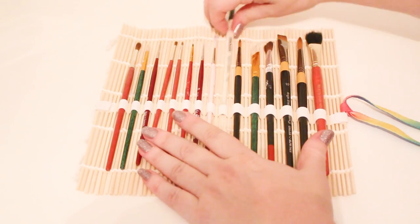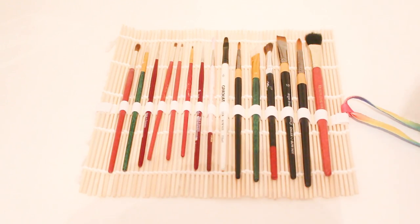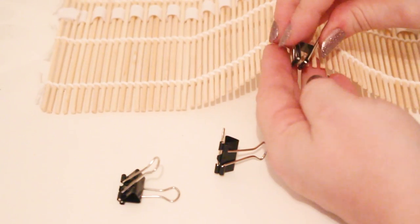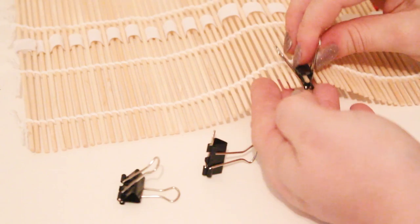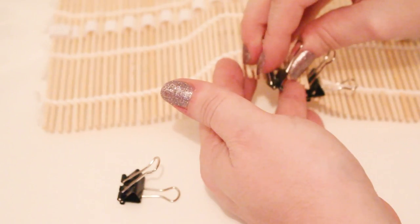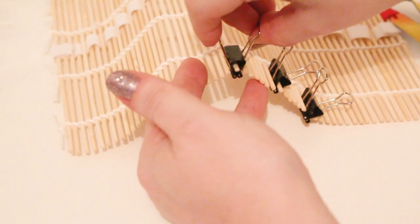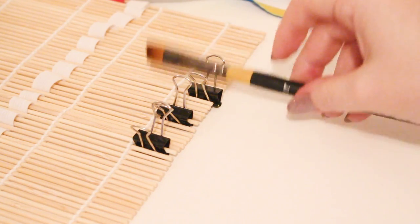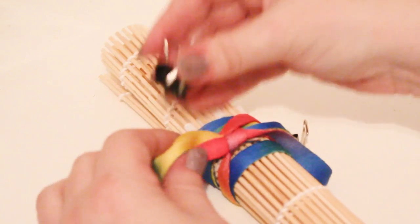And as a little added extra, if when you're using your brushes you don't want to set them down and make a mess of your desk, you could get a couple of bulldog clips and just slide them through the ends of the sushi mat. And so when you put your brush down you could put it down onto the bulldog clip and it holds it up off the desk. And then you could just clip the bulldog clips to it when it's closed.